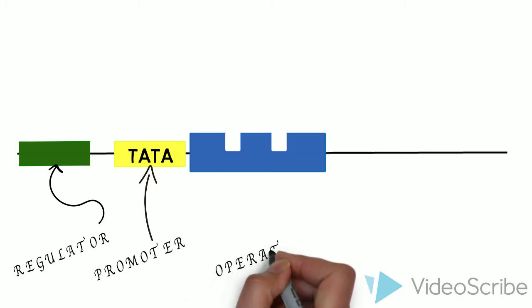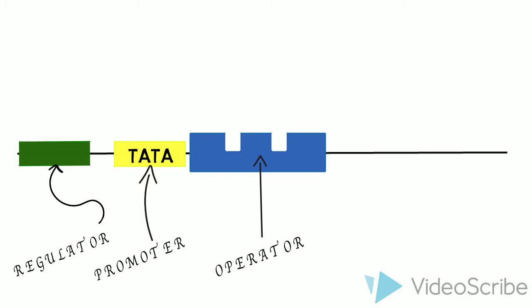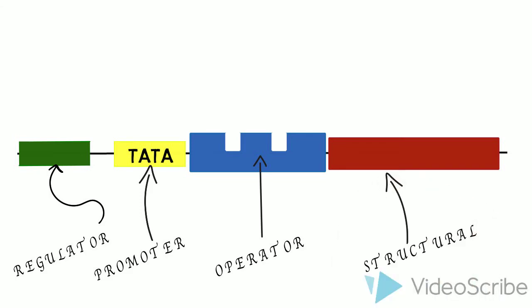Then, we have the operator gene. It is basically the on and off switch. It has a specific sequence which allows the repressor to bind to it. Finally, there are the structural genes. These are the genes that code for the actual proteins we are trying to produce. This can be one or a combination of different genes.